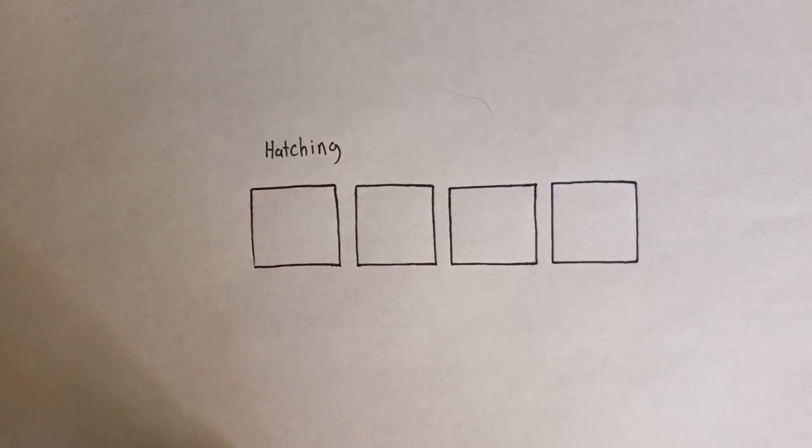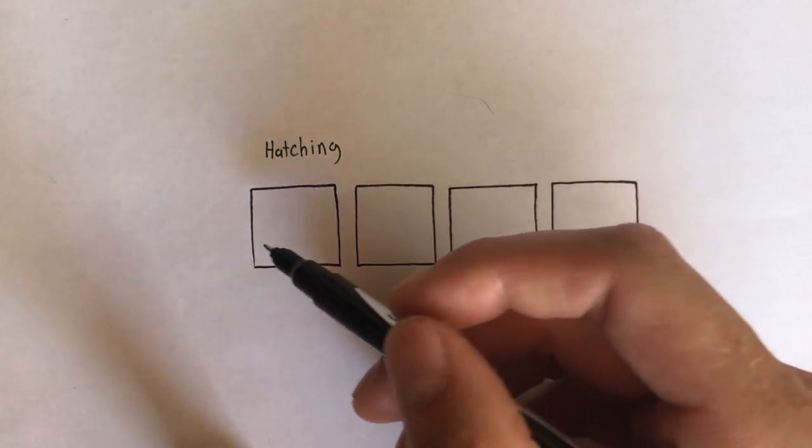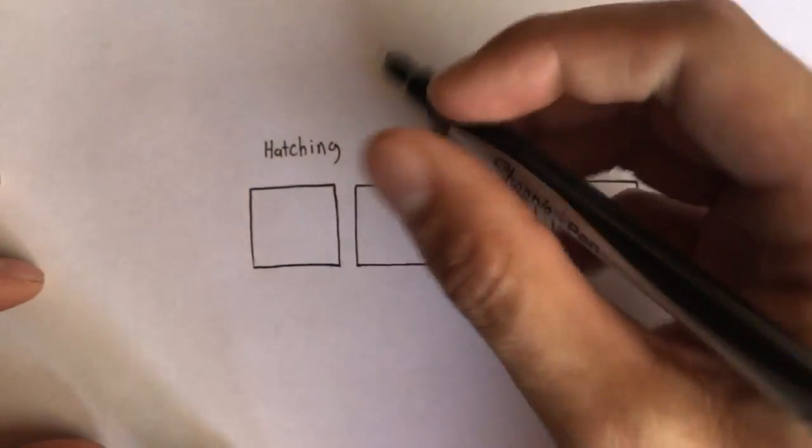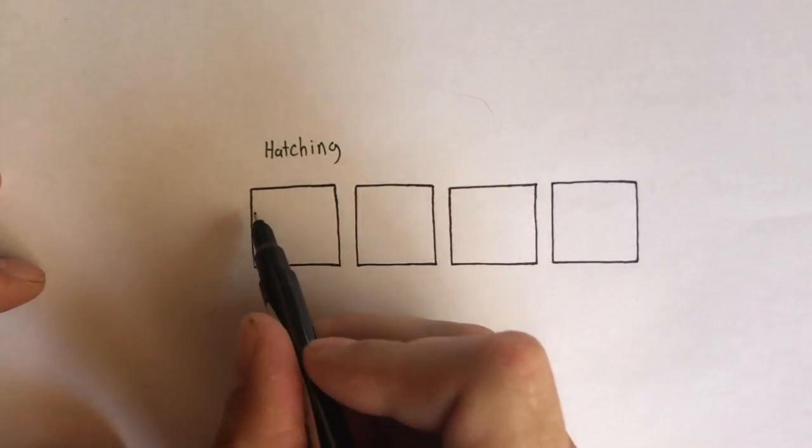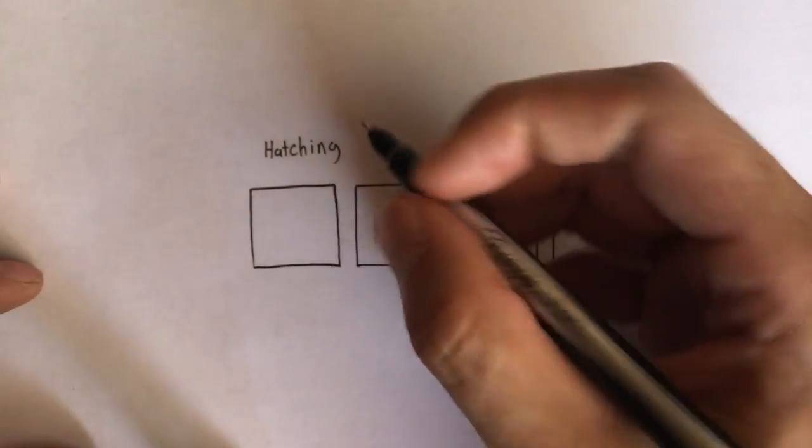So in your first box right here, we're going to put just a series of parallel lines as far apart as we can. And obviously not too far, but we'll see how it goes. So we can go in any direction. We could go horizontally, we could go vertically, but for the sake of this, we're going to go kind of at a diagonal.